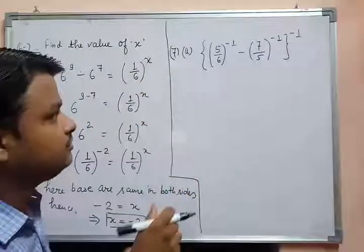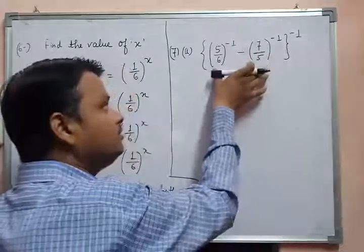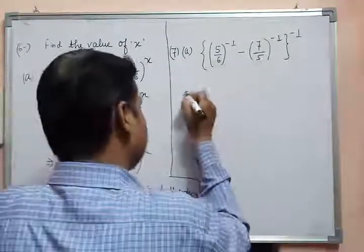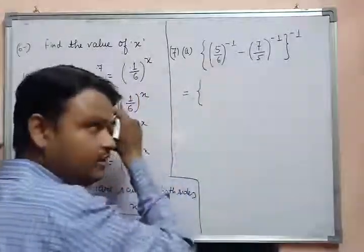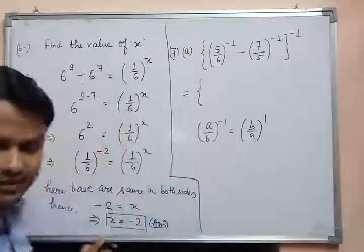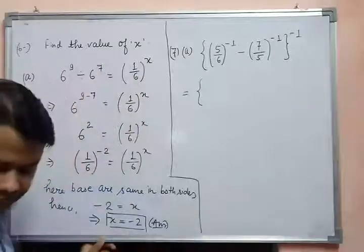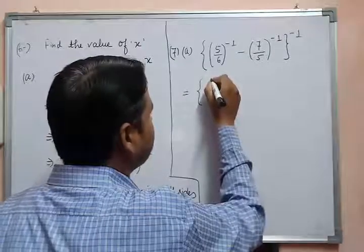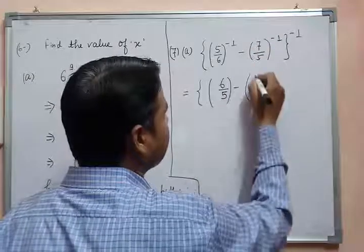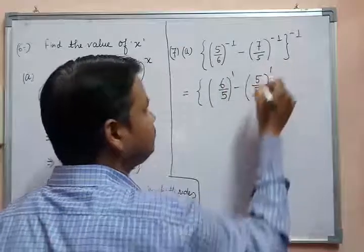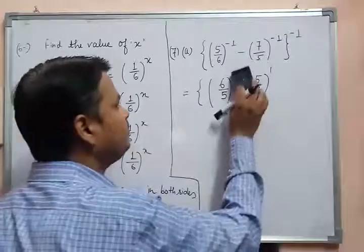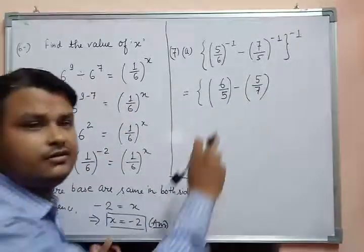In this type of expression, first solve the small bracket, then solve the curly bracket. You all know that if (A/B) to the power minus 1, it can be written as (B/A) to the power 1. Apply this concept: (5/6) to the power minus 1 becomes 6/5, and (7/5) to the power minus 1 becomes 5/7. There is no need to write power 1, as it is understood that 1 is the power of every number.